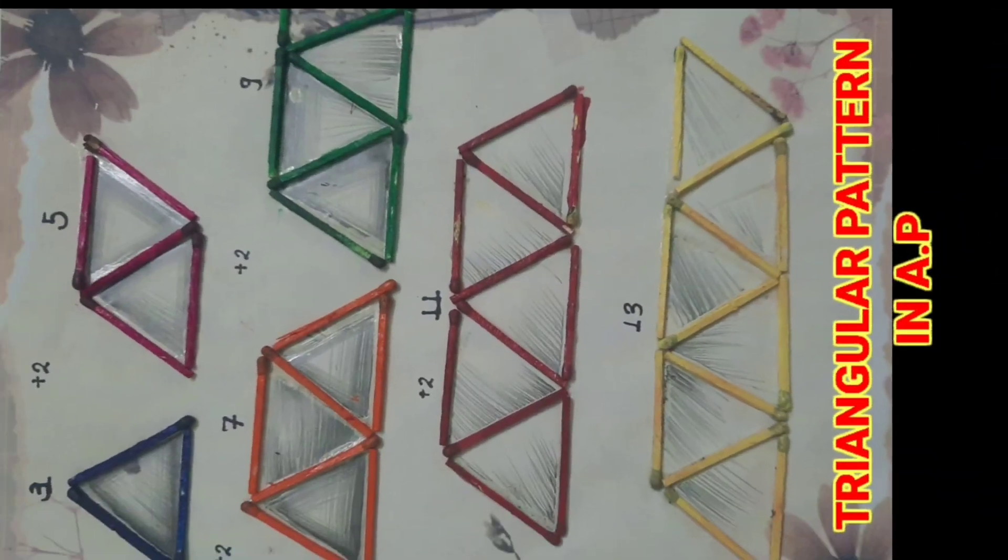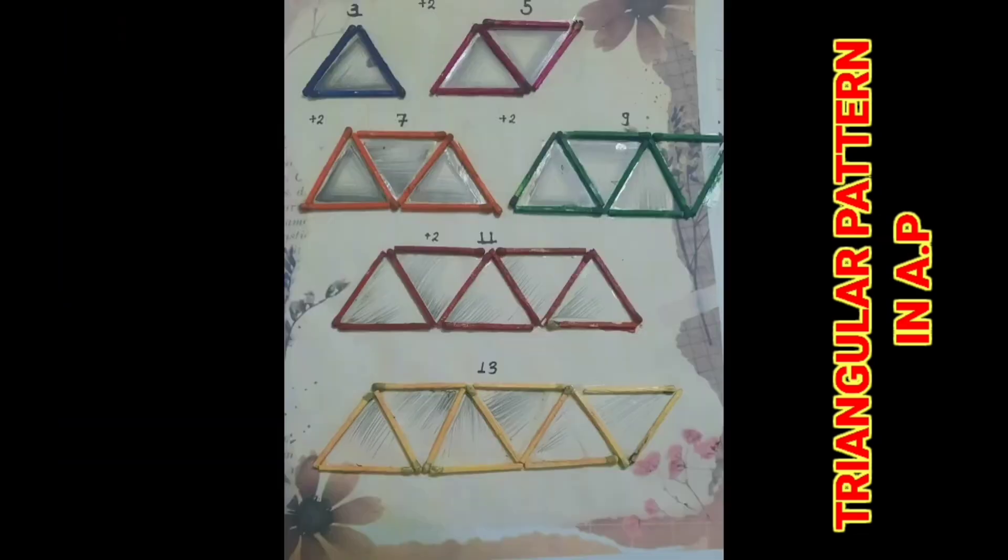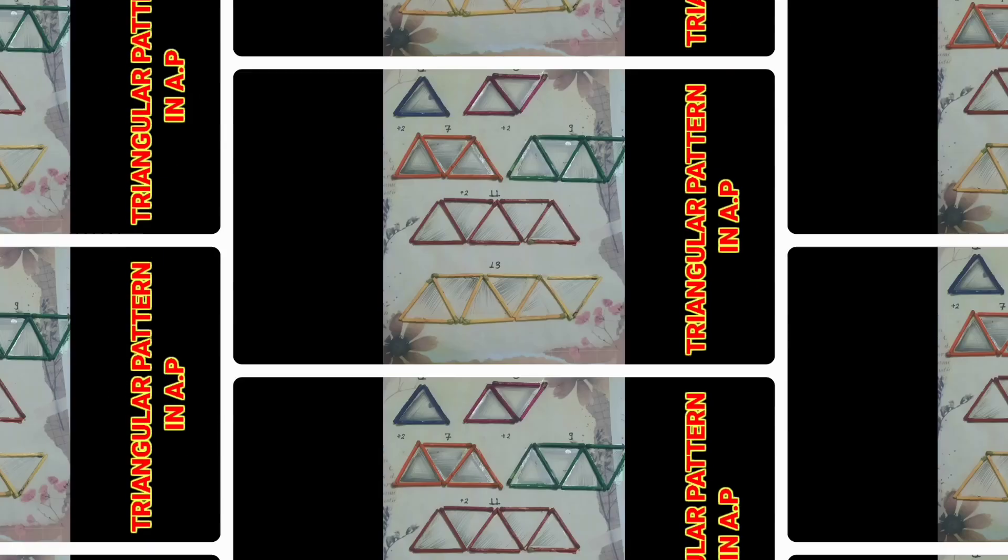The triangular pattern in the next figure needs 3, 5, 7, 9 matchsticks, which again differ by 2, which is again the best example of AP.